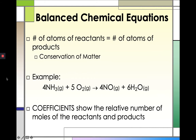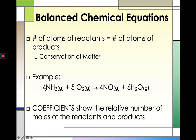Here is an example of a balanced chemical equation. The coefficients — the large numbers before the chemical formulas — tell us about the relative number of moles of the reactants and products. For example, we read this as: 4 moles of ammonia react with 5 moles of oxygen gas to form 4 moles of nitrogen monoxide and 6 moles of water. Or we can say 4 molecules of ammonia react with 5 molecules of oxygen gas to form 4 molecules of nitrogen monoxide and 6 molecules of water.